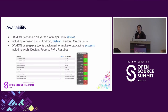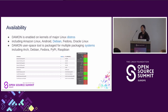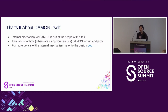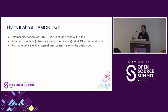Regarding availability, DAMON is currently enabled on kernels of major Linux distros including Android, Amazon Linux, Debian, Fedora, and Oracle Linux. DAMON also provides a user space tool for a more human-friendly interface, packaged for multiple packaging systems including Arch Linux, Debian, Fedora, PyPI, Raspbian, and others. That's the overview of DAMON itself. As I mentioned, the internal mechanics of DAMON are out of scope for this talk — we will focus on how others are using DAMON and how you can use it for fun and real profit.